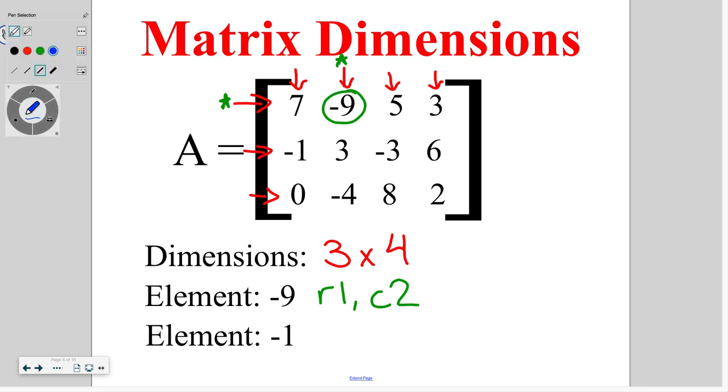Again, another example of this, if I'm looking at element negative one, I'm looking at this time row two, and column one.